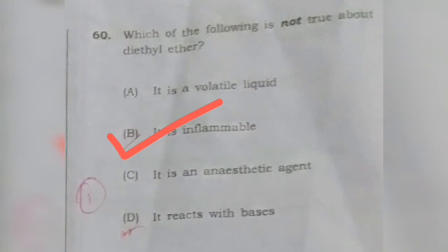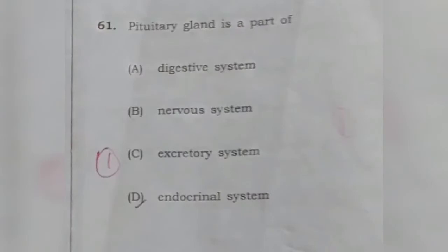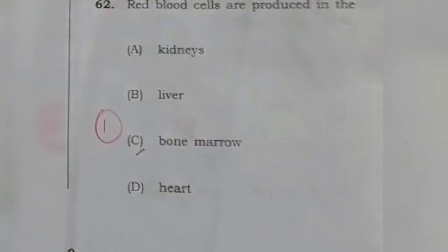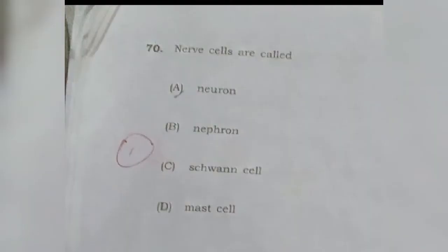Question 61: The pituitary gland is a part of which system? It's the endocrine system. Question 62: Red blood cells are produced in? The answer is bone marrow. Question 70: Nerve cells are called neurons — this option is the correct answer.